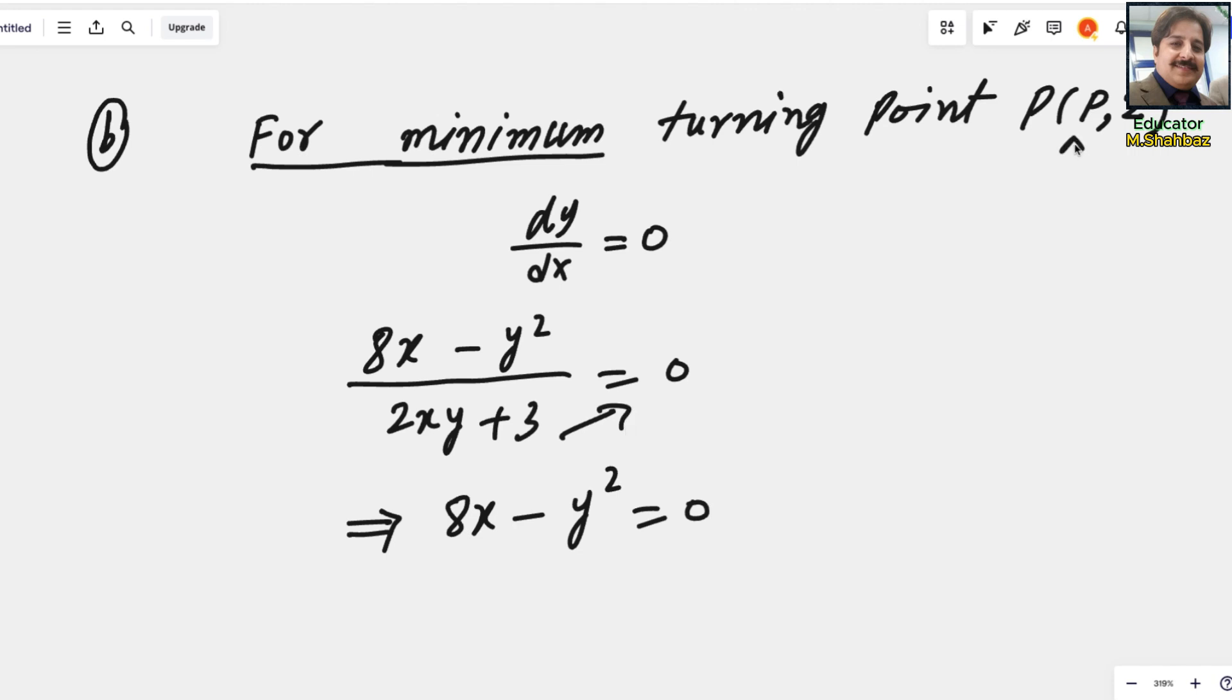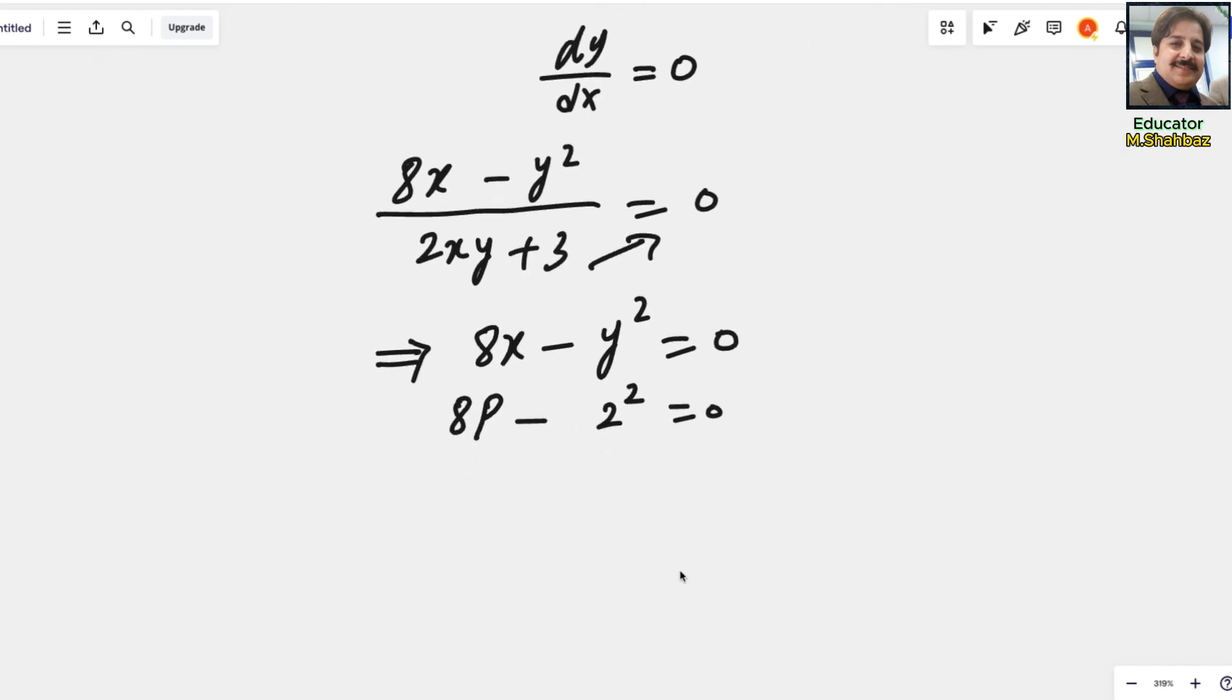This will multiply and you will get rid of the denominator. We know that x is p and y is 2. So you can replace x with p and y with 2. It will be 8p - 2² = 0. Therefore, 8p equals 4, and p equals 4 over 8, which in simplest form is 1/2. So this is p, p is 1/2.